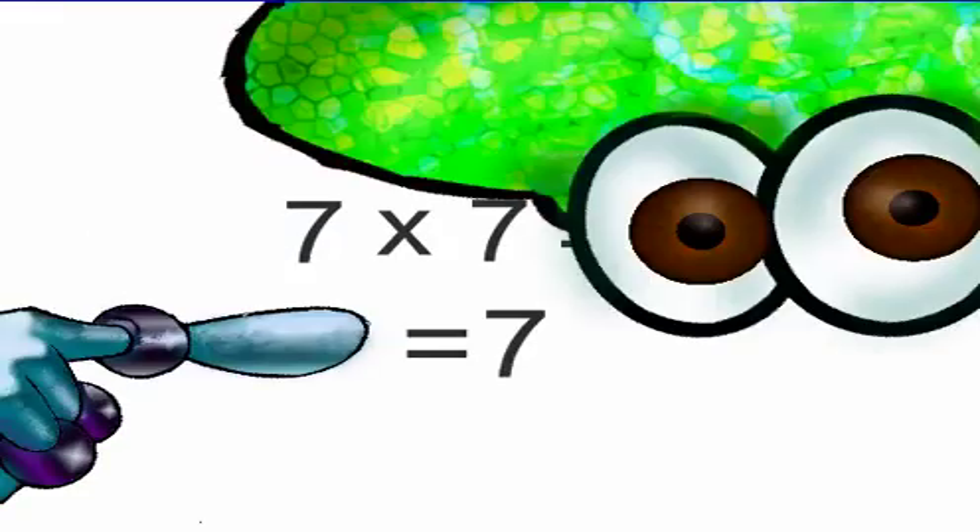Let's do another example. What is the square root of 49? Well, 7 times 7 equals 49. So our answer is 7.